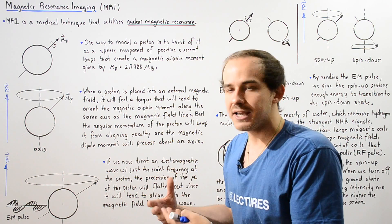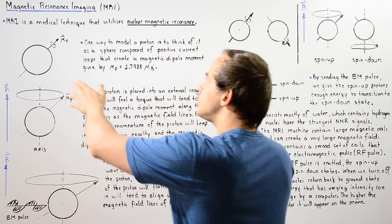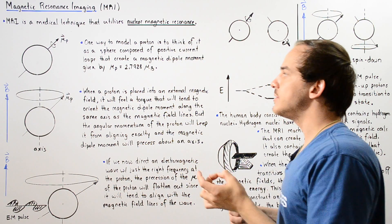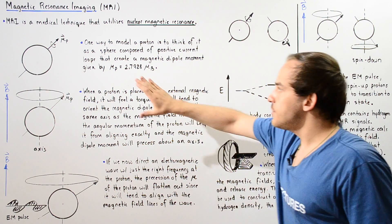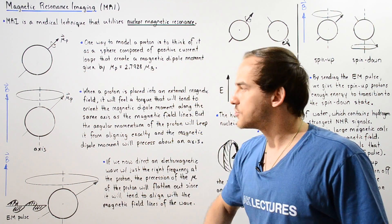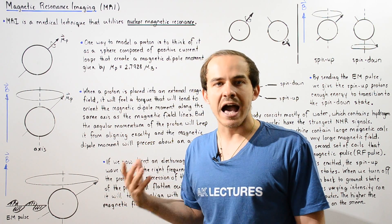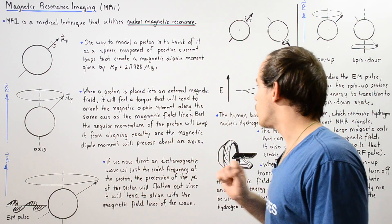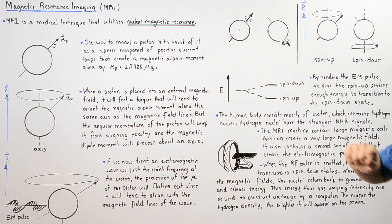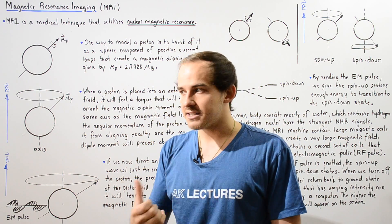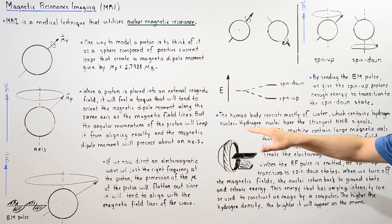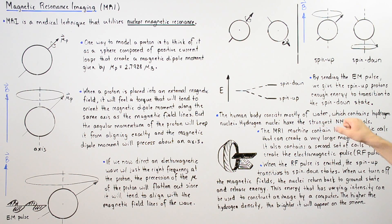How do we apply this to magnetic resonance imaging in humans? Everything discussed holds true for atomic nuclei as well, since nuclei contain protons. The human body consists mostly of water, which contains hydrogen nuclei. It turns out that hydrogen nuclei have the strongest NMR signals, so they most readily exhibit this phenomenon.